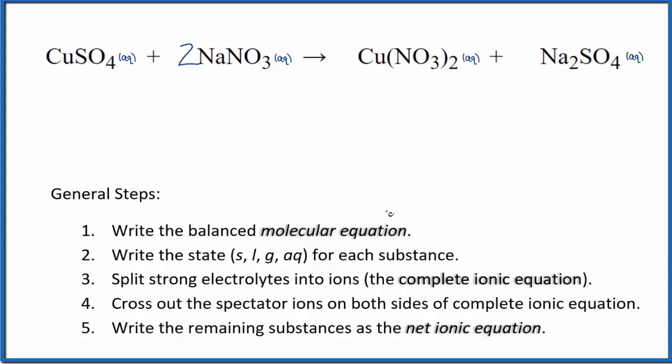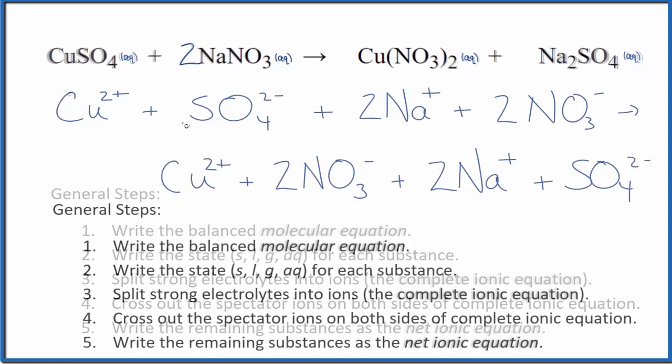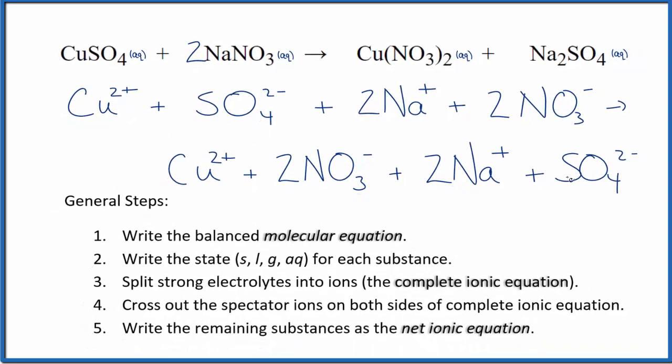If we look at the complete ionic equation, that might make that clearer. So we have our reactants on top and our products on the bottom. And you'll see that they're the same ions. The order might be a little different, but we have the exact same ions on the top here in the reactants than the bottom of the products.